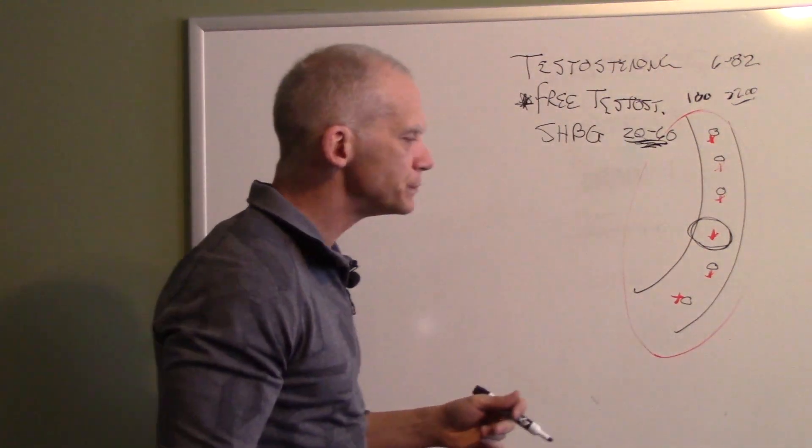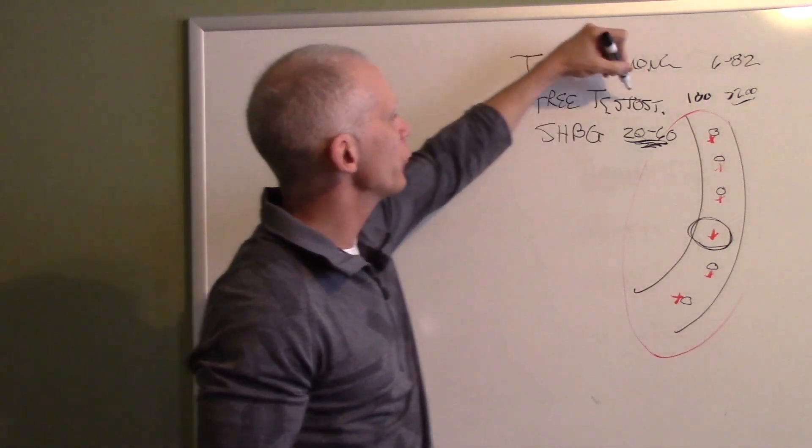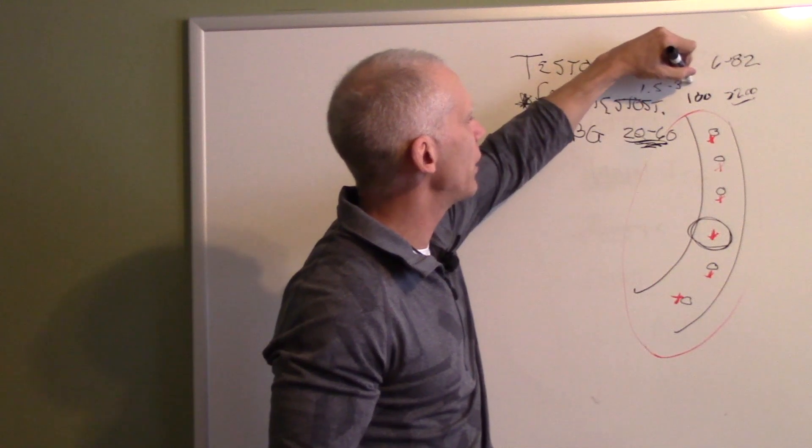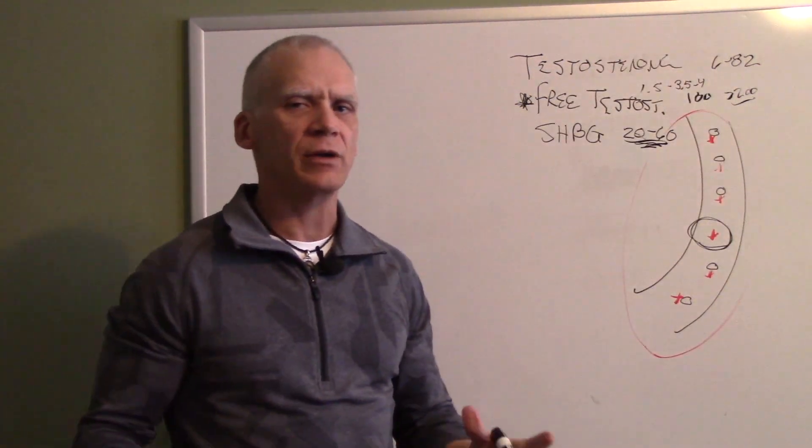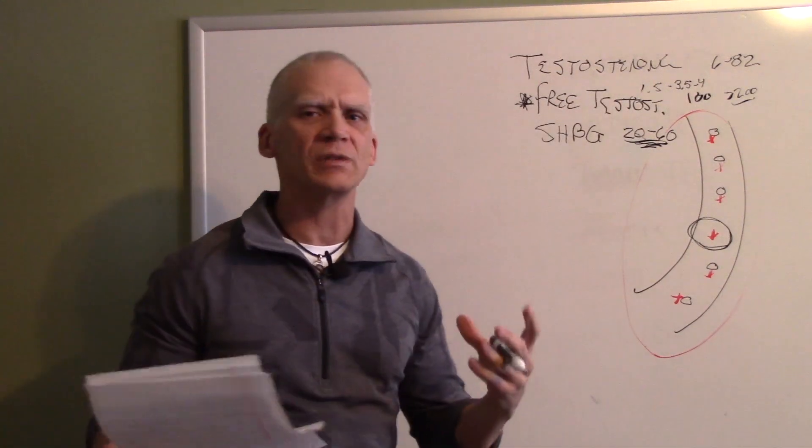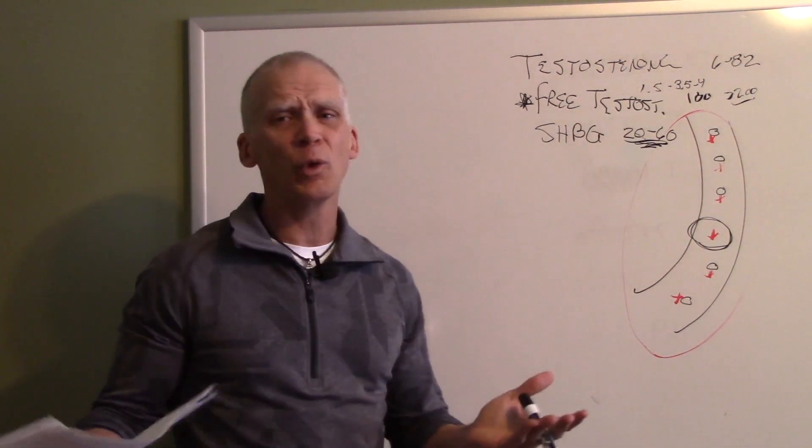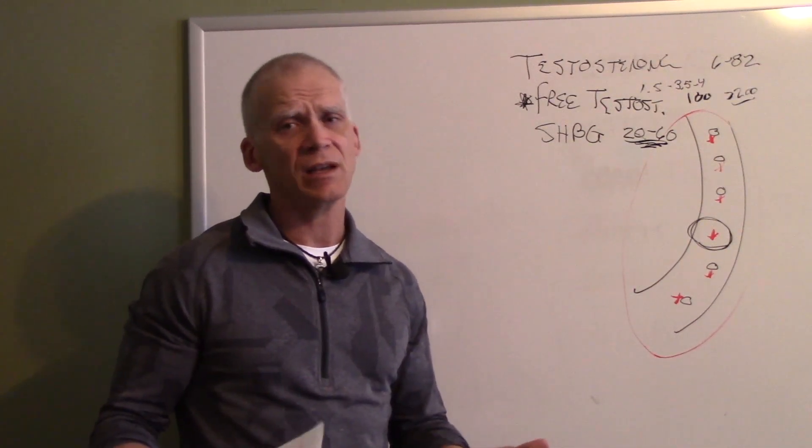Free testosterone. We need to know what that free testosterone is. That is the effective level that we're treating. We see excellent response at a certain level. And typically what I use, when you're dealing with LabCorp, I shoot for a range of somewhere between 1.5 and 3.5 or 4 on the free testosterone. Below 1.5, I really don't see much of a response. Above 4, I see side effects, acne, hair growth, those are the downsides of testosterone.